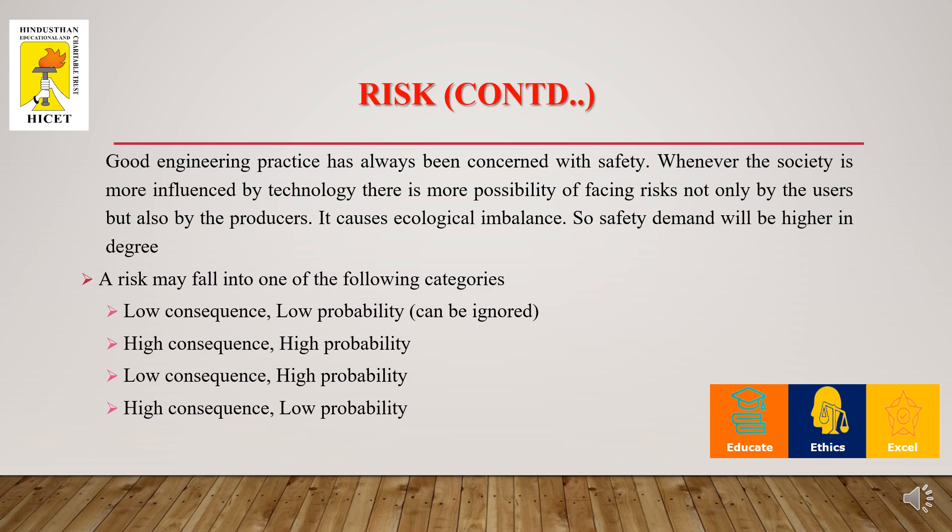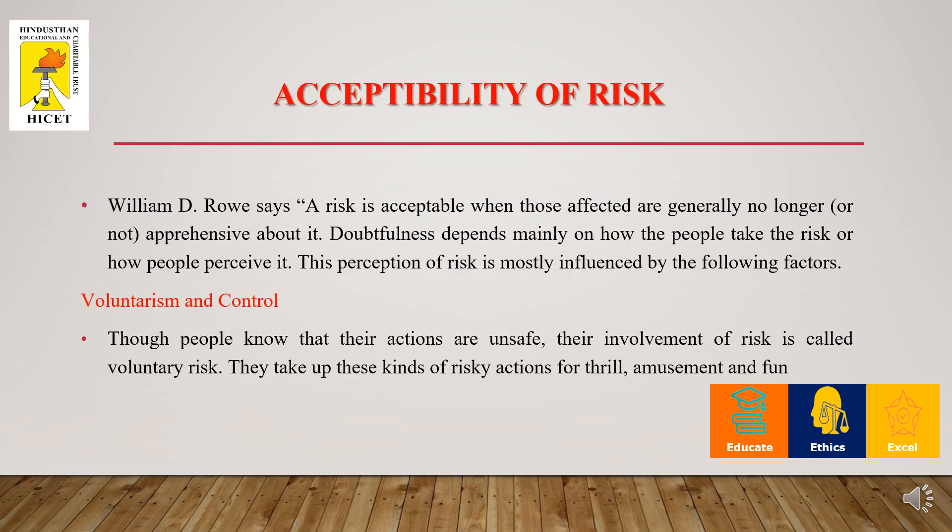Risk may fall into many categories: low consequence and low probability, which can be easily ignored; high consequence and high probability; low consequence and high probability; and high consequence and low probability. According to William D. Rowe, risk is acceptable when those affected are generally no longer apprehensive about it. This depends on how people perceive and take the risk — for example, when undertaking a specific project, it always depends on the risk you take to complete it successfully.